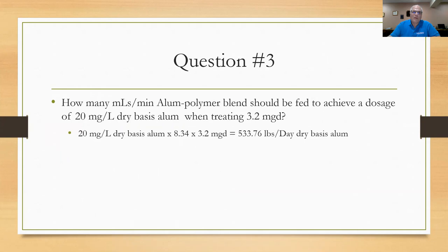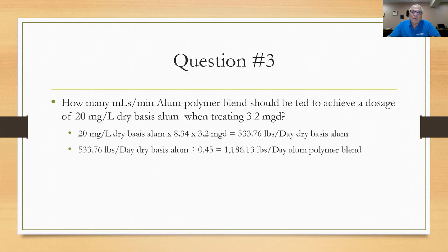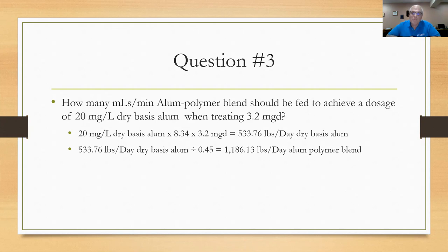First, a basic dosage calculation: 20 mg/L dry basis alum × 8.34 × 3.2 MGD = 533.76 pounds per day of dry basis alum required. From the table, the alum polymer blend is 45% dry basis alum — meaning only 45% of the liquid product is dry basis alum, the rest being water and polymer. Dividing 533.76 ÷ 0.45 gives the amount of alum polymer blend needed: 1,186.13 pounds per day.